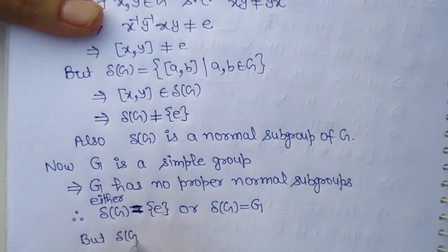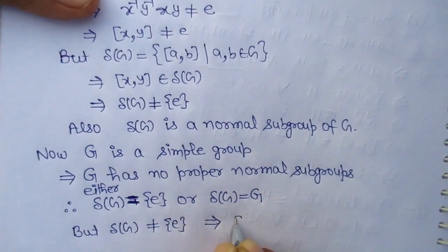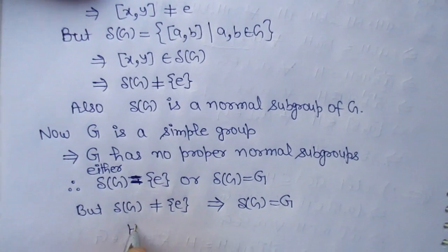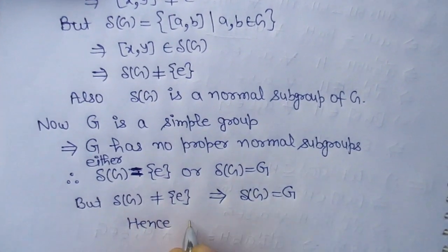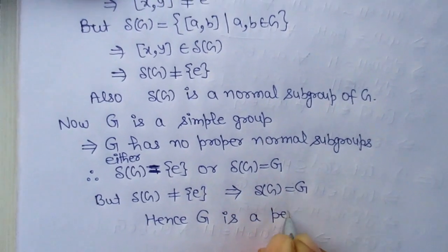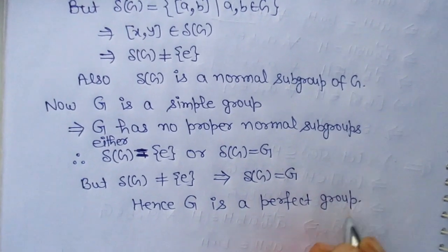But delta G is not equal to identity group. It means delta G is equal to G. It means G is a perfect group, and hence proved.